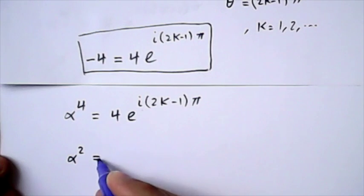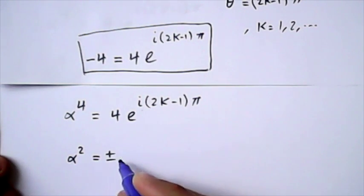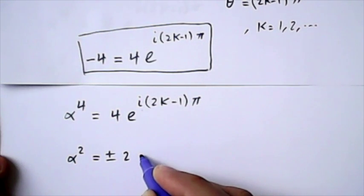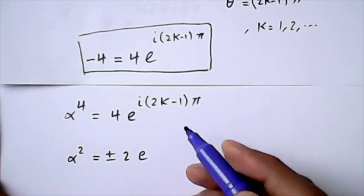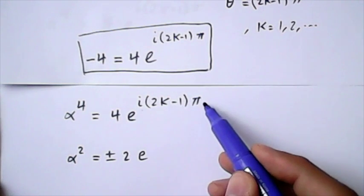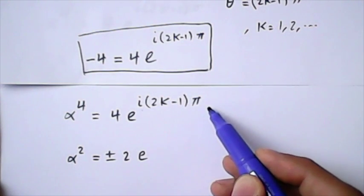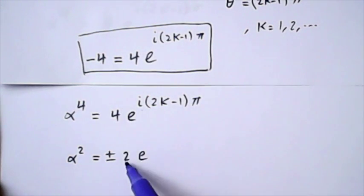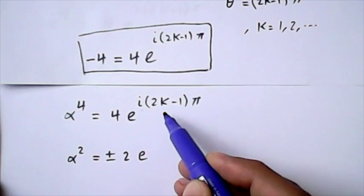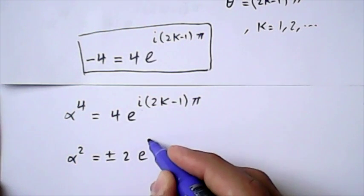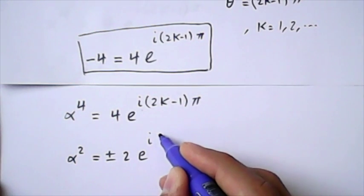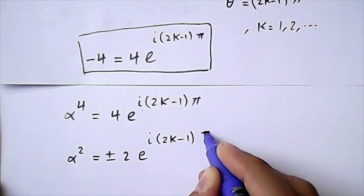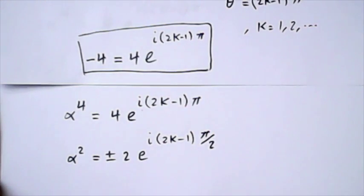Alpha to the power of 2 equals plus and minus 2. Square root of 4 is 2, e to the power... By the way, whenever you take this square root, you can remember you divide the exponent by 2. So I divided the exponent here, which is 1 by 2. So we ended up 4 to the power of 1 over 2 became 2. I would do the same thing with e to the power i, 2k minus 1 times pi divided by 2, just because I took this square root.